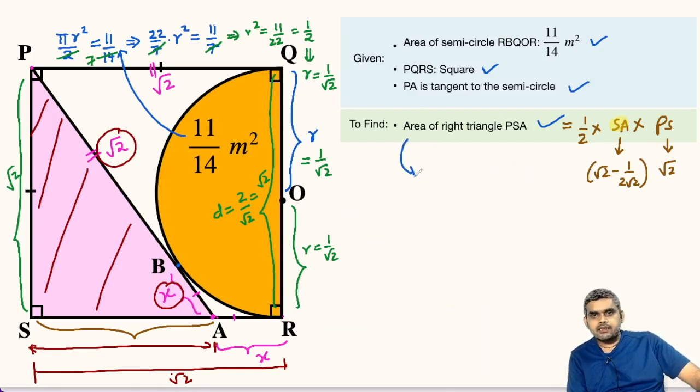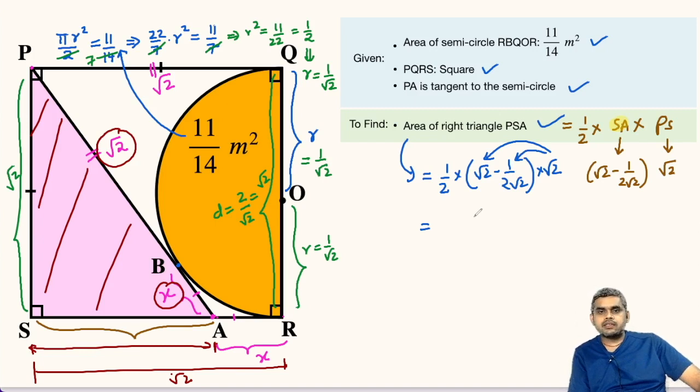So, the area of this right triangle PSA can be written as half times root 2 minus 1 upon 2 root 2 times root 2. Now, we will multiply root 2 with root 2 and with the other term. So, this will be half times root 2 times root 2 is 2 minus this will be half. So, half multiplied with 2 minus half is 3 by 2. So, this will be 3 by 4 square units.